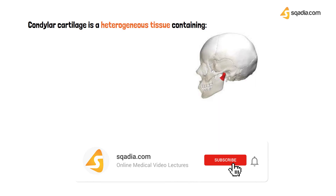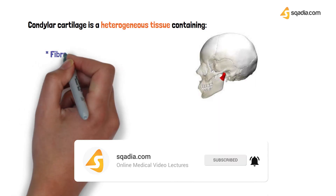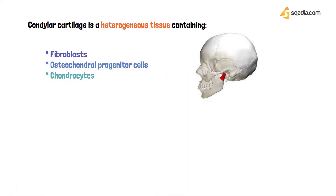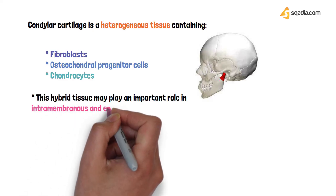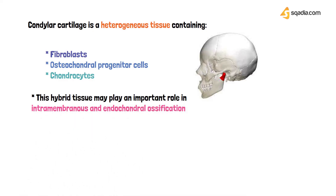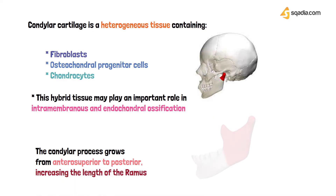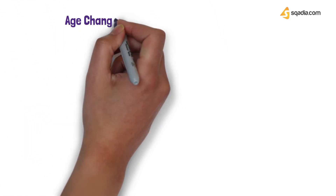The condylar cartilage also grows and contributes to mandible growth. It is a heterogeneous tissue containing fibroblasts, osteochondral progenitor cells, and chondrocytes — a hybrid tissue that plays an important role in regulating bone formation through both intramembranous and endochondral ossification. The condylar process grows in a wide range of directions from anterior-superiorly to posteriorly, increasing the length of the ramus.